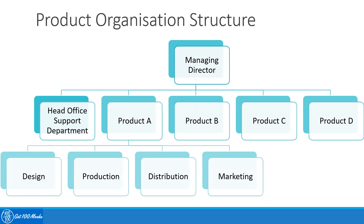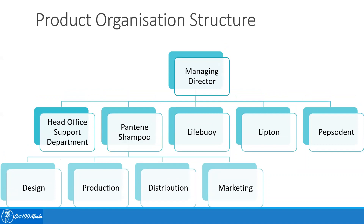Under each product head, you'll have all different functions like design, production, distribution, and marketing. This is a sample from an HUL perspective of how a product structure can look. For example, Pantene shampoo can be a product where there is a chief brand manager or chief executive of Pantene shampoo who has P&L responsibility, with departments for design, production, distribution, and marketing all under that product.